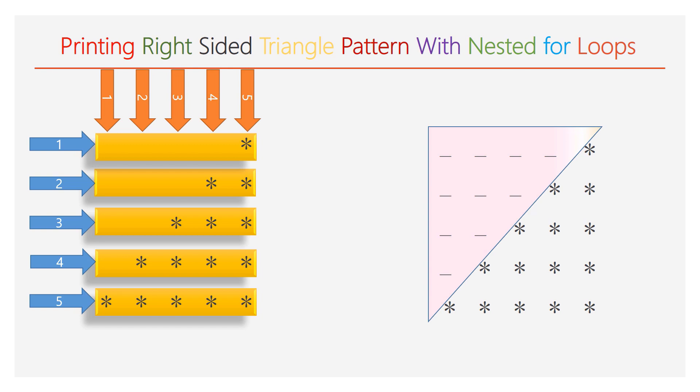The pattern has two triangles. The first one is a decreasing triangle with space. For better visualization and understanding, instead of empty space, underscore symbols are used. The second one is an increasing triangle with stars. Look at the given pattern.